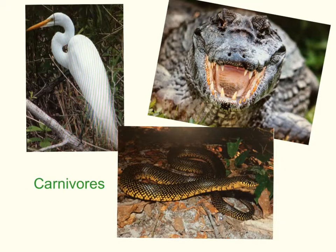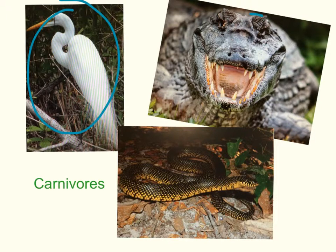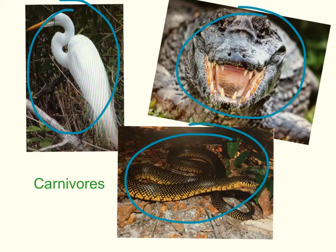Carnivores are the meat-eaters of the marsh. Some examples of carnivores would be egrets, alligators, and the speckled kingsnake.